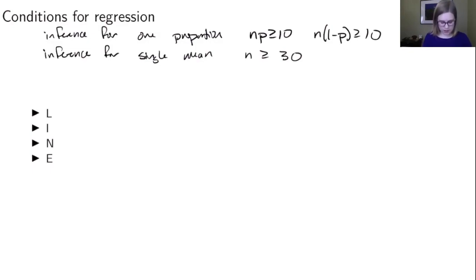So there's a little mnemonic device that helps you remember the four conditions. It's L-I-N-E, and that stands for linearity, independence, normality, and equality of variance. So I'm going to show you what each of those conditions means.